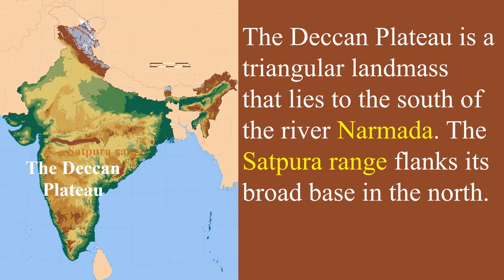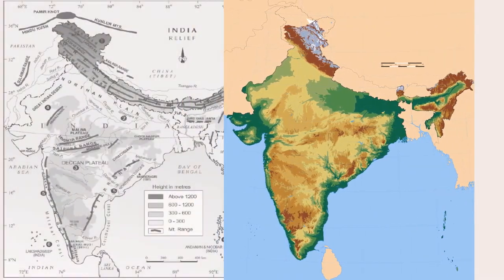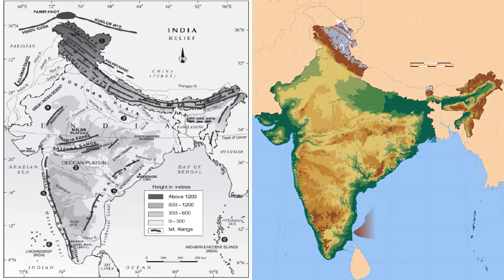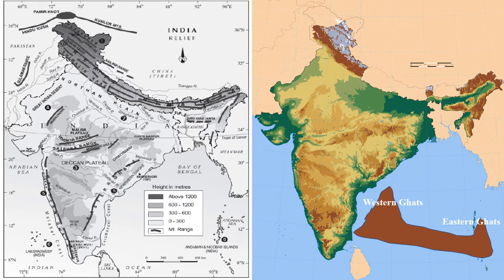The Deccan Plateau is higher in the west and slopes gently eastward — it is tilted towards the east. That is the reason all the Peninsular rivers are drained into the Bay of Bengal.